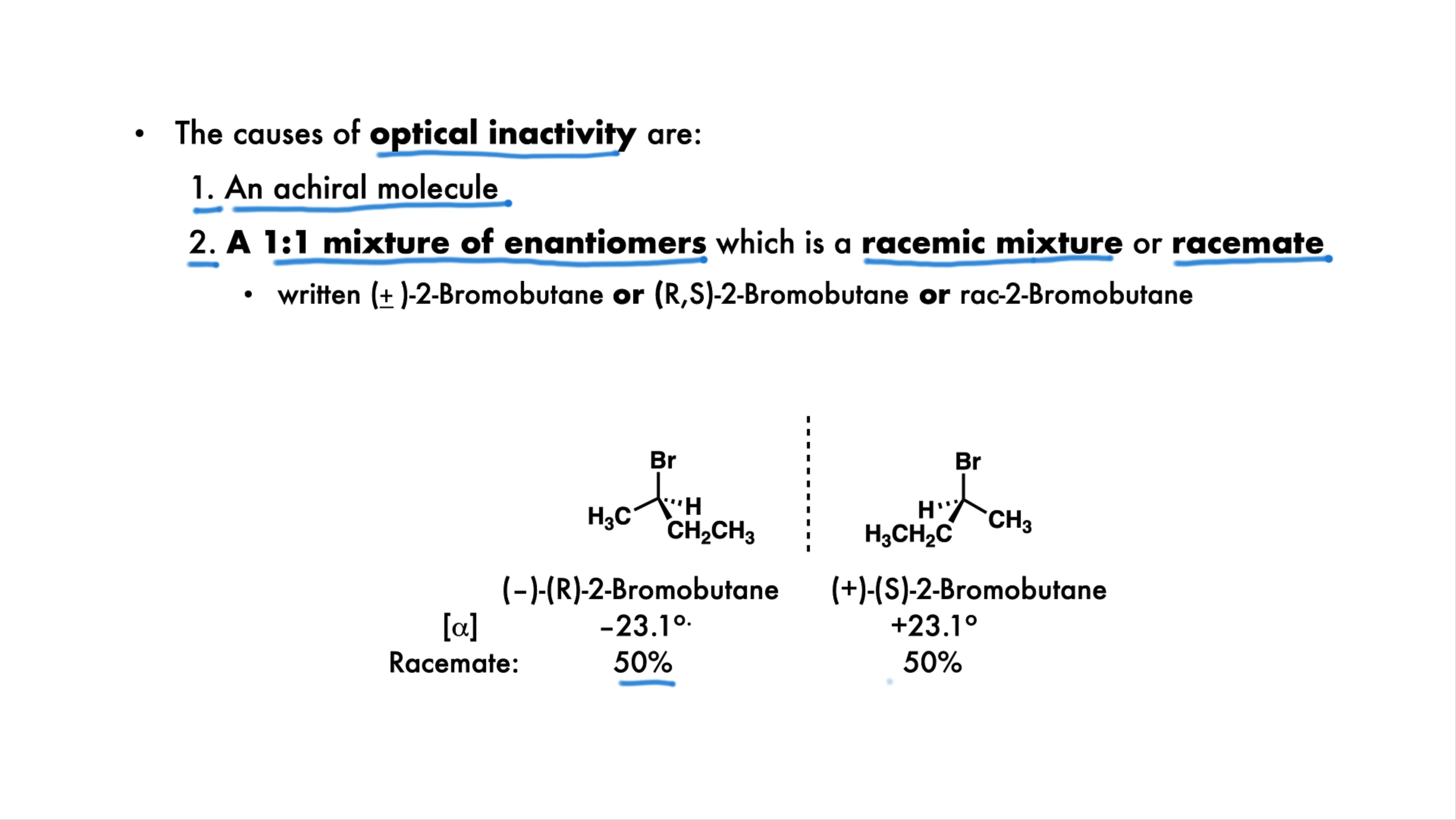If you have a 50-50 mixture of enantiomers, then every time one molecule of an enantiomer rotates the plane polarized light in one direction, a molecule of the opposite enantiomer will rotate it in exactly the opposite direction. The two rotations cancel out, and there is no net rotation. Usually when you see a chiral compound, it exists as a racemic mixture, unless you are told otherwise.